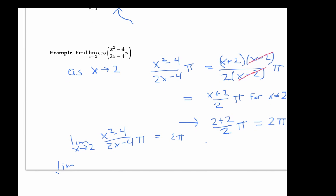And therefore, the limit as x goes to 2 of cosine of this expression is just cosine of 2 pi, which is again equal to one.